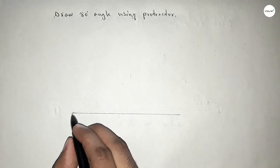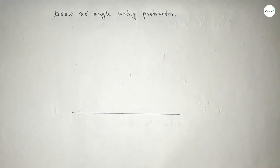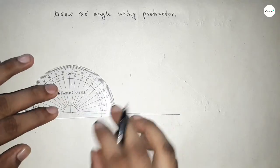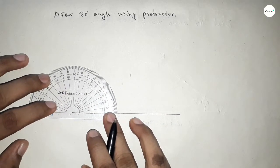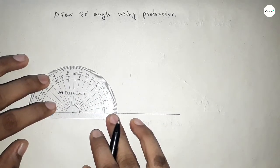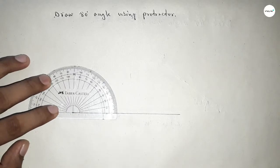Now using the protractor. So first, putting the protractor on the line perfectly by this way. Next, counting the angle.